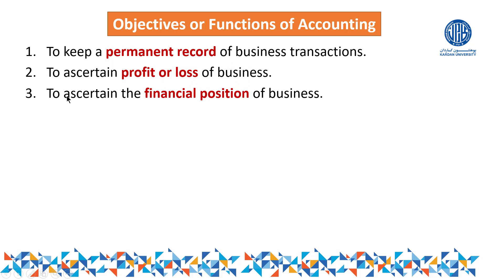The third objective is to ascertain the financial position of the business. Financial position simply means how much assets we have in the business and how much liabilities we have. Whether our assets equal our liabilities — they should be equal. If not, there is a problem with the business.